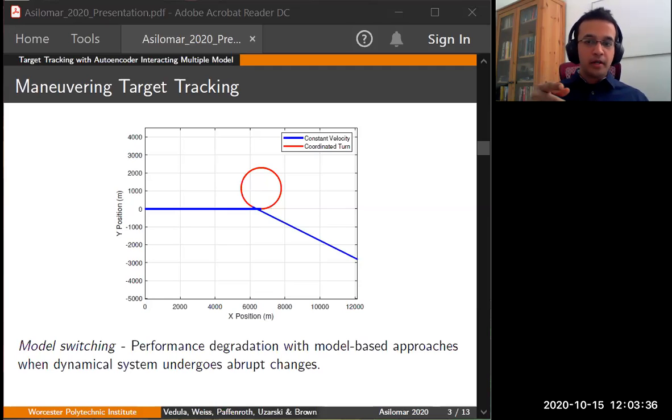Then we shift to coordinated turn or the CT mode, marked in red. Within this CT mode, Kalman filter also knows the model. It has additional knowledge of angular velocity and can optimally track the angular velocity and other states in this mode.